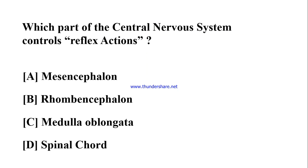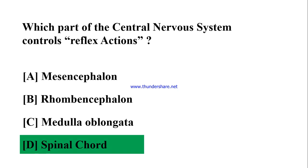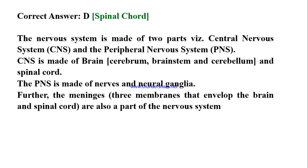Which part of the central nervous system controls reflex actions? A) Mesencephalon, B) Rhombencephalon, C) Medulla oblongata, D) Spinal cord. Correct answer: D) Spinal cord. The nervous system has two parts: the central nervous system (CNS), made of the brain (cerebrum, brainstem, cerebellum) and spinal cord; and the peripheral nervous system (PNS), made of nerves and neural ganglia. The meninges — three membranes enveloping the brain and spinal cord — are also part of the nervous system.